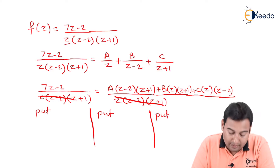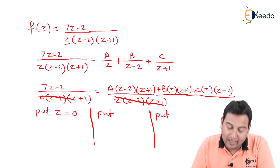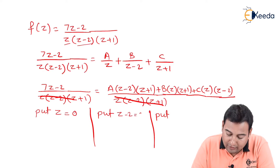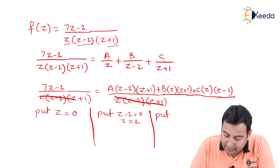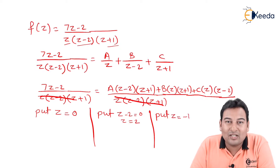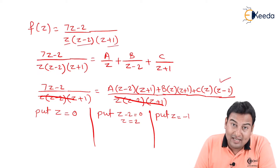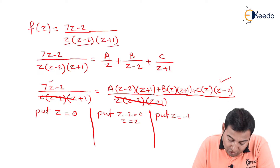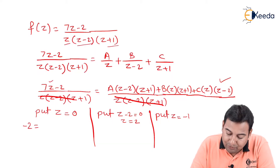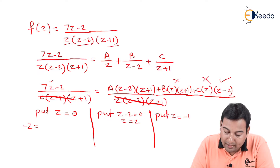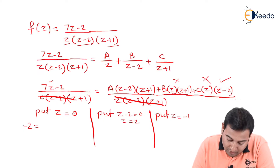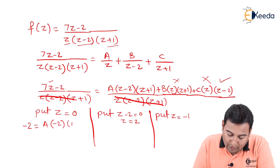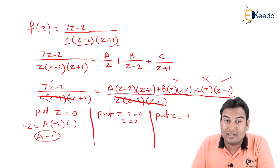Put z equal to 0: in the LHS you get minus 2. The B and C terms vanish because z equals 0 makes those terms zero, so you are left with A times (minus 2)(1) = minus 2. Therefore A equals 1, since the minus 2 cancels from both sides.